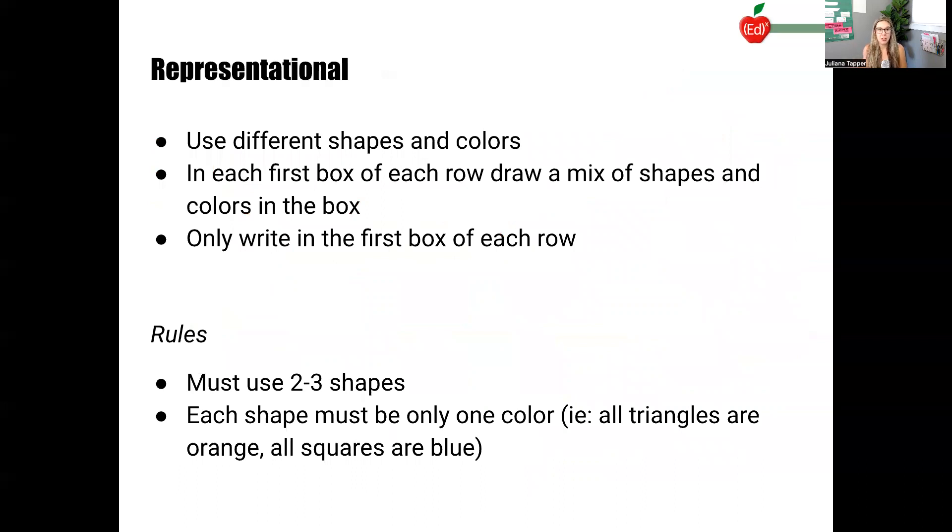Then we move on to the representational stage. So with this, we're going to use different shapes and colors. In each first box of each row, draw a mix of shapes and colors in the box. Again, you can download the handout and use this exact handout. So in the first box of each row, so that first column, draw a mix of shapes and colors in the box, and only write in the first box of each row. So that's what partner one is going to do.